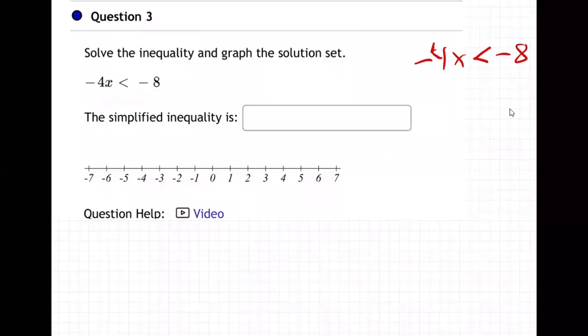We're trying to get x alone. The less than is kind of like the equal sign usually is - it's the wall of separation. Trying to get x alone here. What do I have to do to get x alone? Can I add 4 to both sides? Is that a good idea?